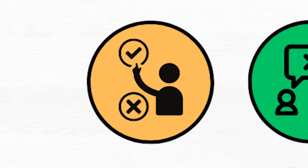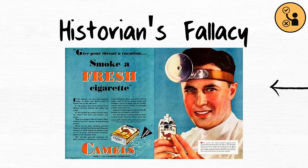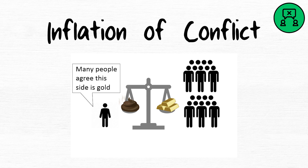Historian's fallacy. The historian's fallacy assumes past decisions were made with present knowledge. Inflation of conflict. The inflation of conflict exaggerates disagreement to invalidate claims.